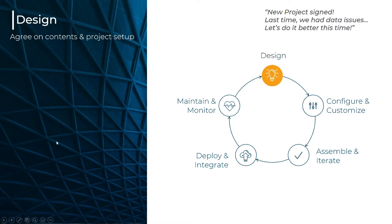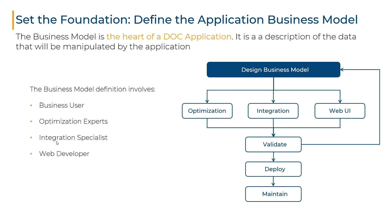During this tutorial we will go through the creation of an application. The first step is to agree on the business model or data model that will be handled by the application. This is what we call the design business model phase. The business model covers all application needs in terms of data, including the user interface, what should be displayed and analyzed by the application user, the optimization engine requirements, what input data is needed and what output data will be generated. This phase also covers data from external systems or published to external systems. Designing properly this business data model is a key step in building an application.